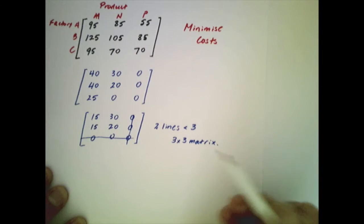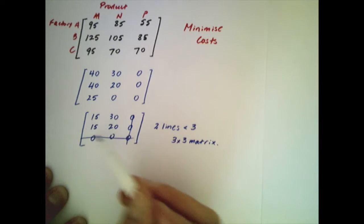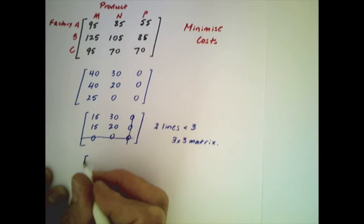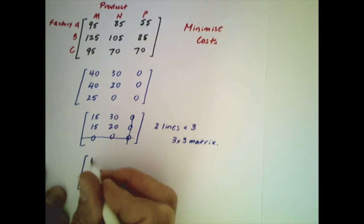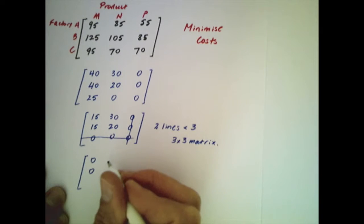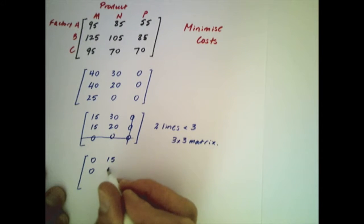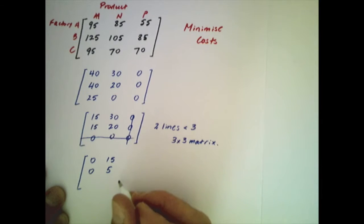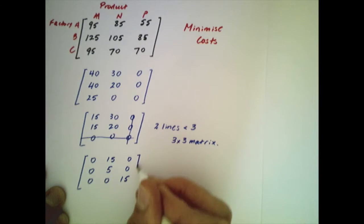So what we need to do is look at the numbers that are not crossed out. The smallest of those is 15. We're going to subtract 15 from each of those entries. But what we're also going to do is add 15 to the zero that's at the intersection of the two lines that have been used. And that applies for any zero that's at an intersection of the cross lines.